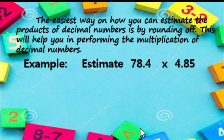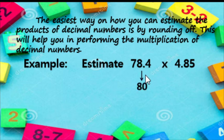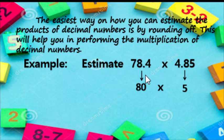Let us have another example. We have 78.4 times P4.8500. We round off to the nearest whole number: 78.4 becomes 80, and 4.8500 rounds to 5. Then we multiply: 80 times 5 equals 400.